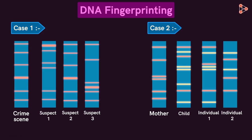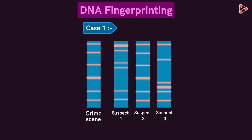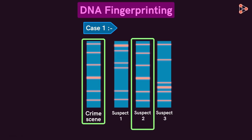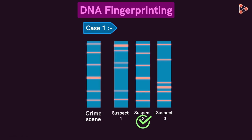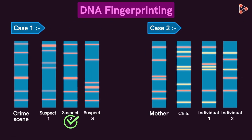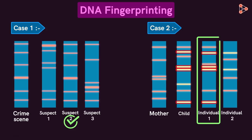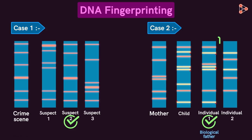For instance, looking at the results of the first part, we can almost be sure that suspect two is the criminal. And similarly in the second part, we can say that individual one is the biological father of the child.